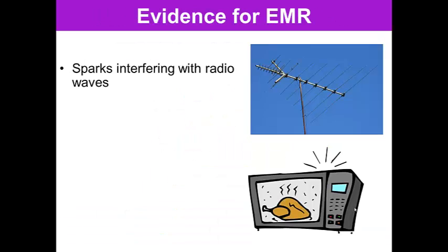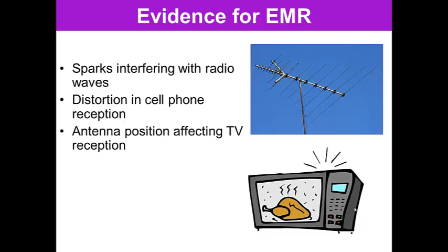What are some evidence for electromagnetic radiation? Sparks interfering with radio waves are one example. Distortion in cell phone reception is another example of electromagnetic radiation in our environment. Antenna positioning affects TV reception, and this is sort of an old school example. There are no antennas anymore for television.